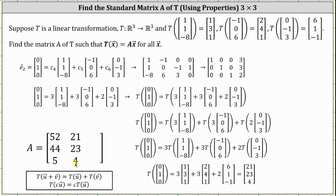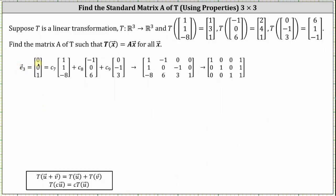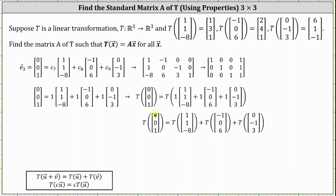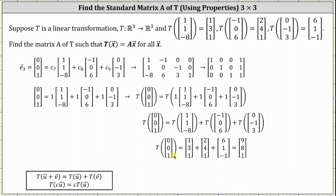Now we go through the process one more time for the vector E sub three. The vector (0, 0, 1) is written as a linear combination of the three vectors we know the transformations for. The augmented matrix written in reduced row echelon form shows that C sub seven through C sub nine are all one. So (0, 0, 1) equals one times (1, 1, -8) plus one times (-1, 0, 6) plus one times (0, -1, 3). Taking the transformation of both sides and dropping the constants of one, the transformation of (0, 0, 1) is just the sum of the three given transformations, which gives us the vector (9, 8, 1). Therefore the third column of matrix A, the standard matrix or transformation matrix, is (9, 8, 1).